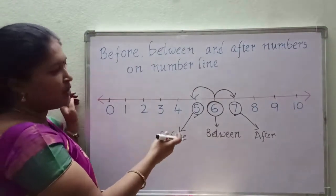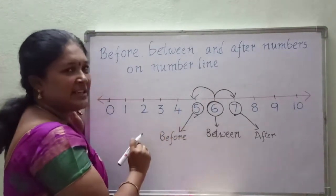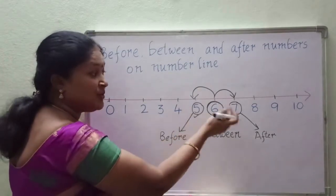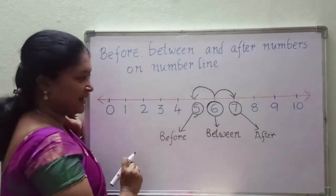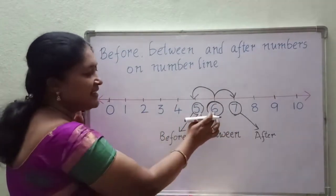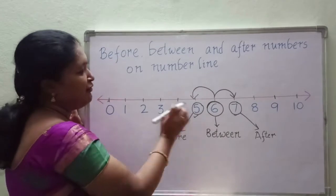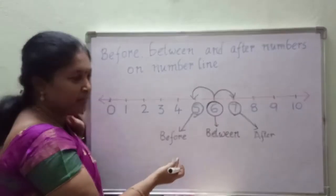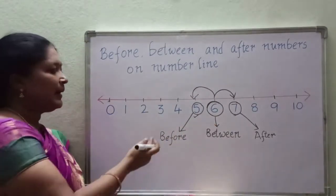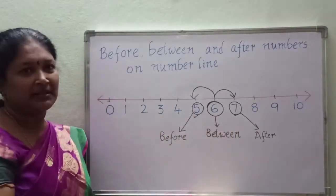So here one more also we can tell children. 5 — after which number is there? 6. 6 — after which number is there? 7. And 7 — before which number is there? 6. 6 — before which number is there? 5. And what is the between number here? 6. So this is about before, between and after numbers.